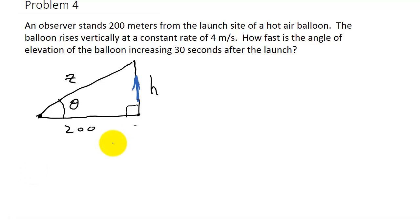All right, so we need to come up with an equation. I want to know how fast the angle of elevation is increasing. But before I come up with my equation, let's see what all they give me. Well, they tell me the balloon rises vertically at a constant rate of 4 meters per second. So that's the change in the height. dh/dt is 4 meters per second. And then really they're telling me what this height is 30 seconds after the launch.